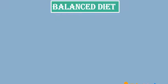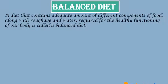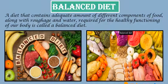Now let's revise our last topic, that is balanced diet. A diet that contains adequate amounts of different components of food along with roughage and water for the healthy functioning of the body is called a balanced diet. Our diet must include adequate amounts of all 5 components of food as well as roughage and water.